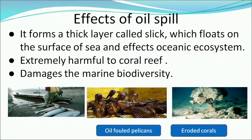Effects of oil spills: oil forms a thick layer called a slick which floats on the surface of the sea and affects the oceanic ecosystem. Since oil is lighter than water, it forms a cover over the water, cutting off the oxygen supply for organisms in the water. Oil spills are extremely harmful to coral life and damage marine biodiversity.